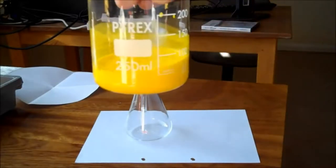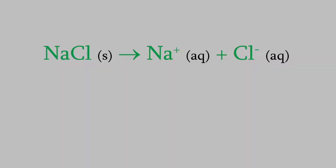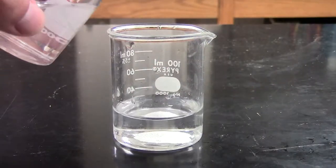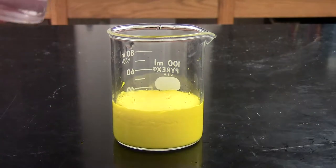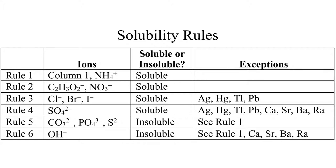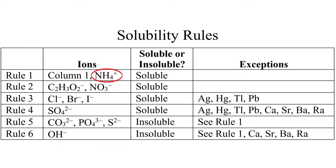Way back in the early days of General Chem 1, we learned that many ionic compounds are soluble in water, such as sodium chloride, but certain ionic compounds are insoluble and form precipitates. We saw that there are a small number of rules we can use to predict whether an ionic compound is soluble or not. Rule 1 tells us that any compound that has a cation from the first column of the periodic table is soluble in water — that's every ionic compound with sodium, potassium, and similar elements. Also, all compounds with ammonium ion as the cation are soluble.